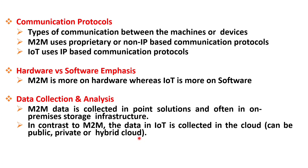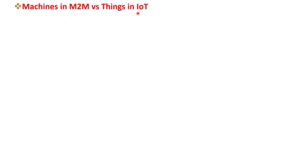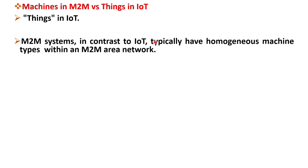We will discuss the cloud concept in more detail in future videos. Now let's discuss the concept of machines in M2M and things in IoT. The things in IoT refers to physical objects that have unique identifiers and devices that can sense and communicate with their external environment or with their internal physical states. M2M systems, in contrast, typically have homogeneous machine types within an M2M area network, meaning the devices connected are of the same type or have similar capabilities, often purposely built for a particular application or industry.